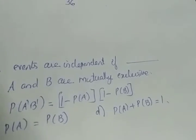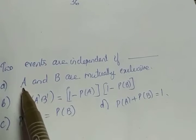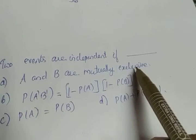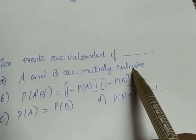The next event. Two events are independent if—and option A is A and B are mutually exclusive. Mutually exclusive does not imply that always they are independent.